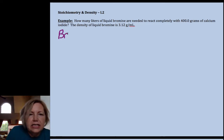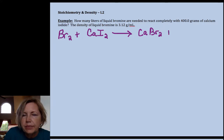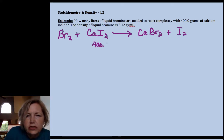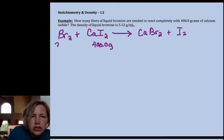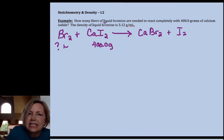So I've got liquid bromine reacting with calcium iodide and this is a single replacement since bromine is above iodine, it's more active. So I'm going to end up with calcium bromide plus iodine for our balanced equation. So I have 400 grams of calcium iodide and it asks me question mark liters. This is where some students would be tempted to use the molar volume, but molar volume is for gas and this is a liquid.